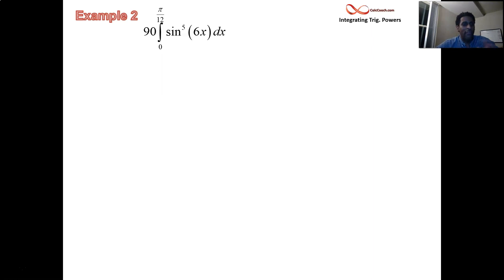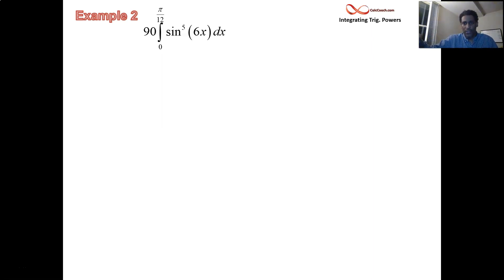We recognize the presence of an odd power. So we accordingly follow the formula that says we should factor out one of those powers and leave the other powers there to be converted to the other trig function. Sin to the fifth of 6x is going to be factored to be sin to the fourth of 6x times sine of 6x. I changed the color on that so you can see it's going to be part of du. I say part of du because it's not exactly all of du like we had in example one.